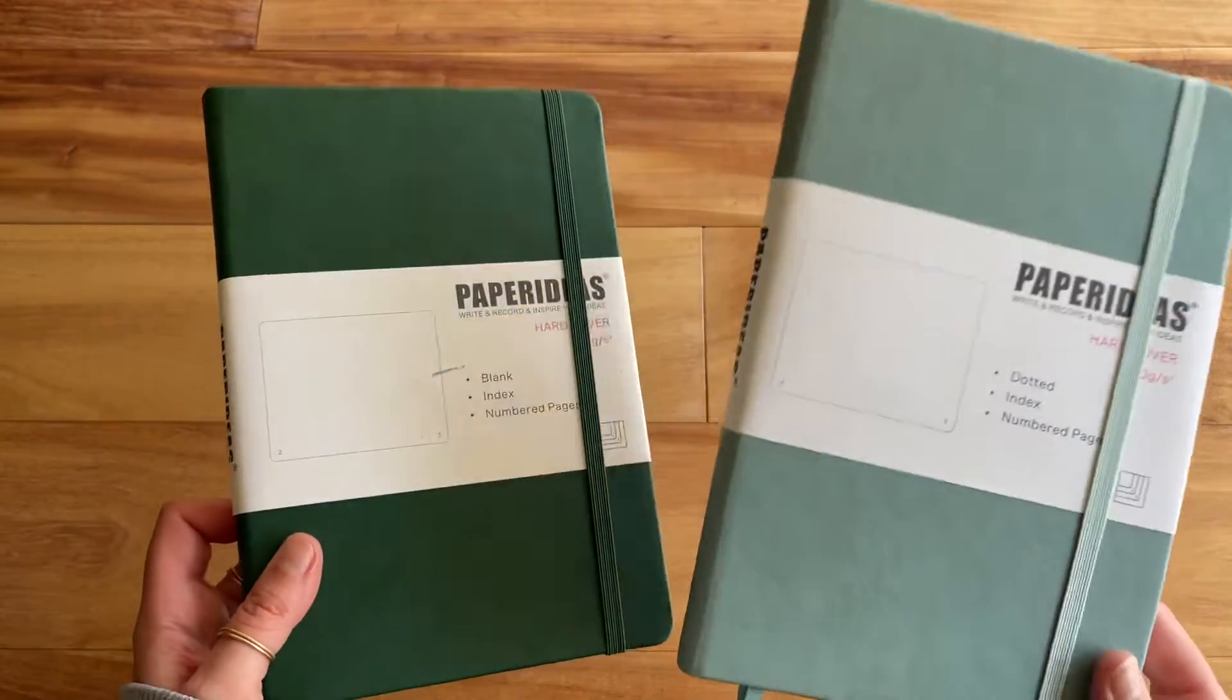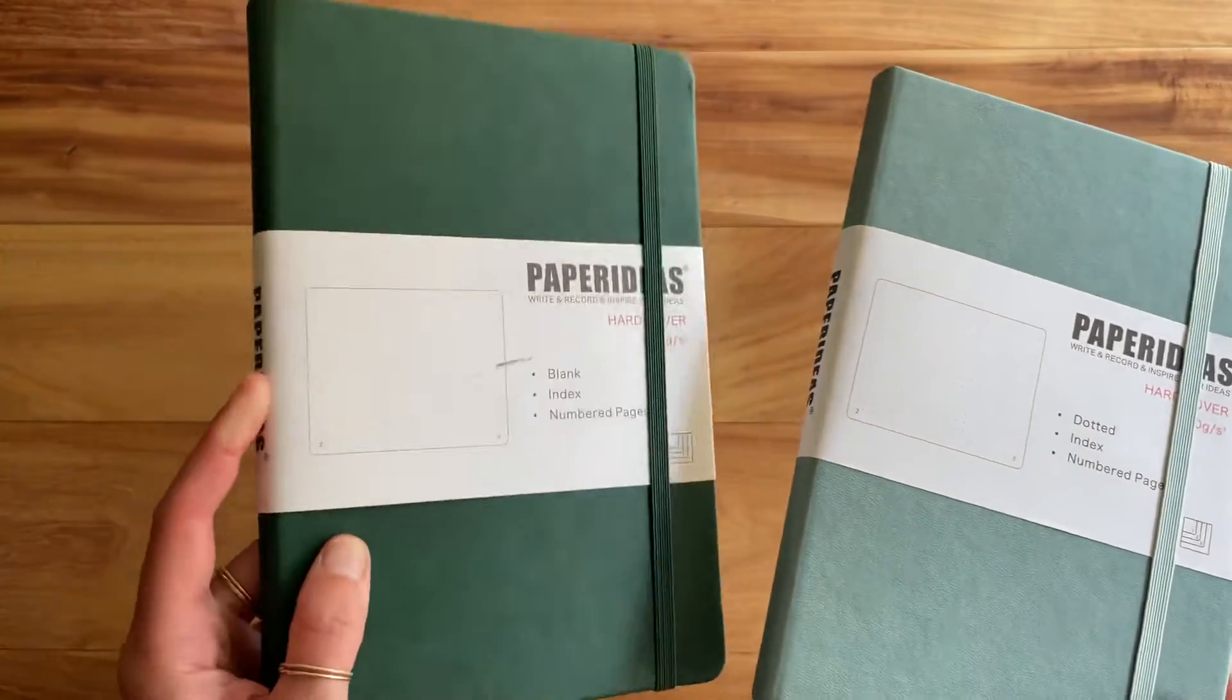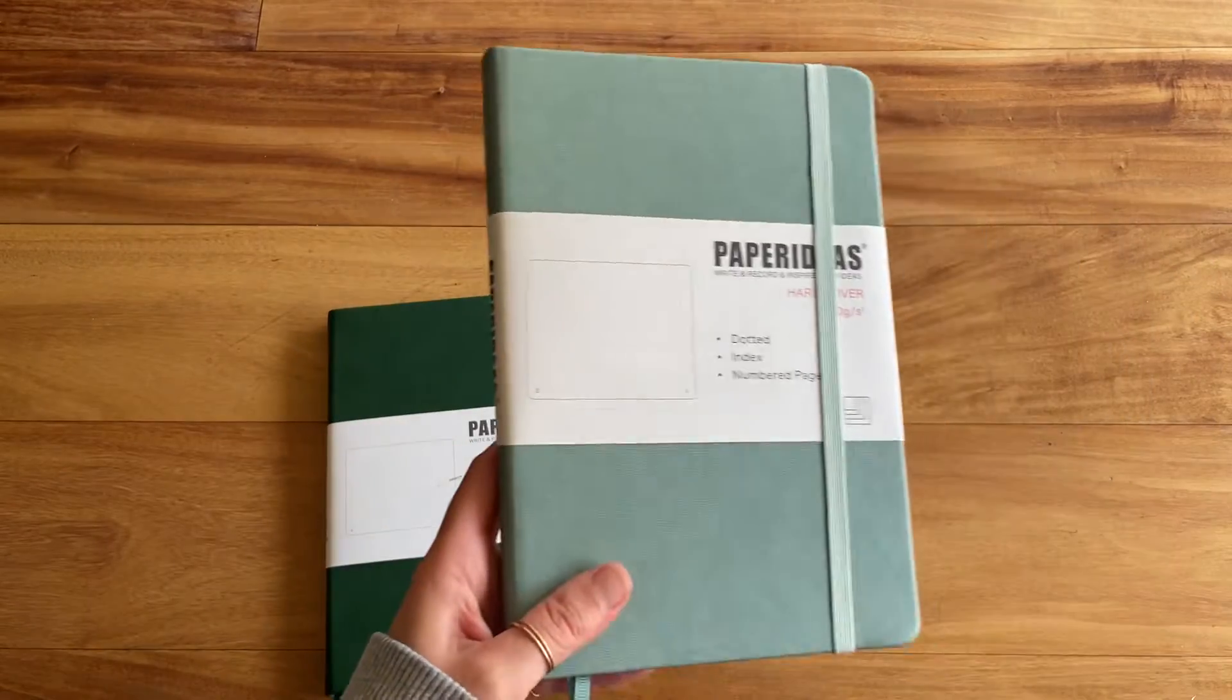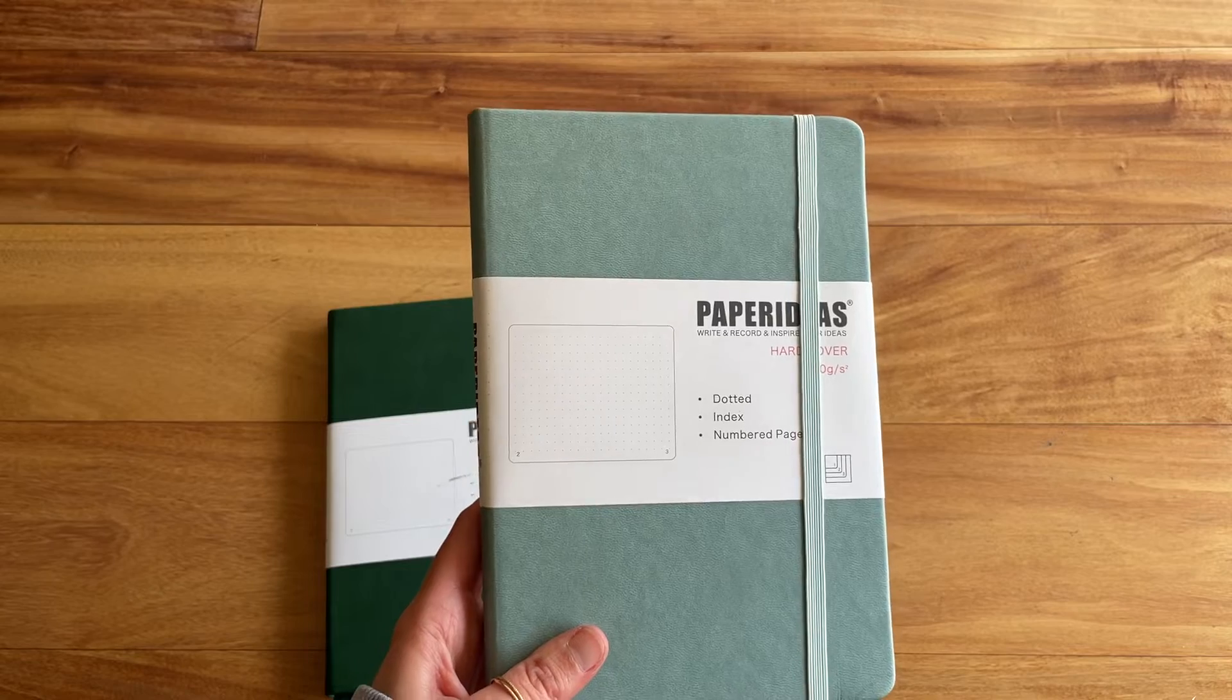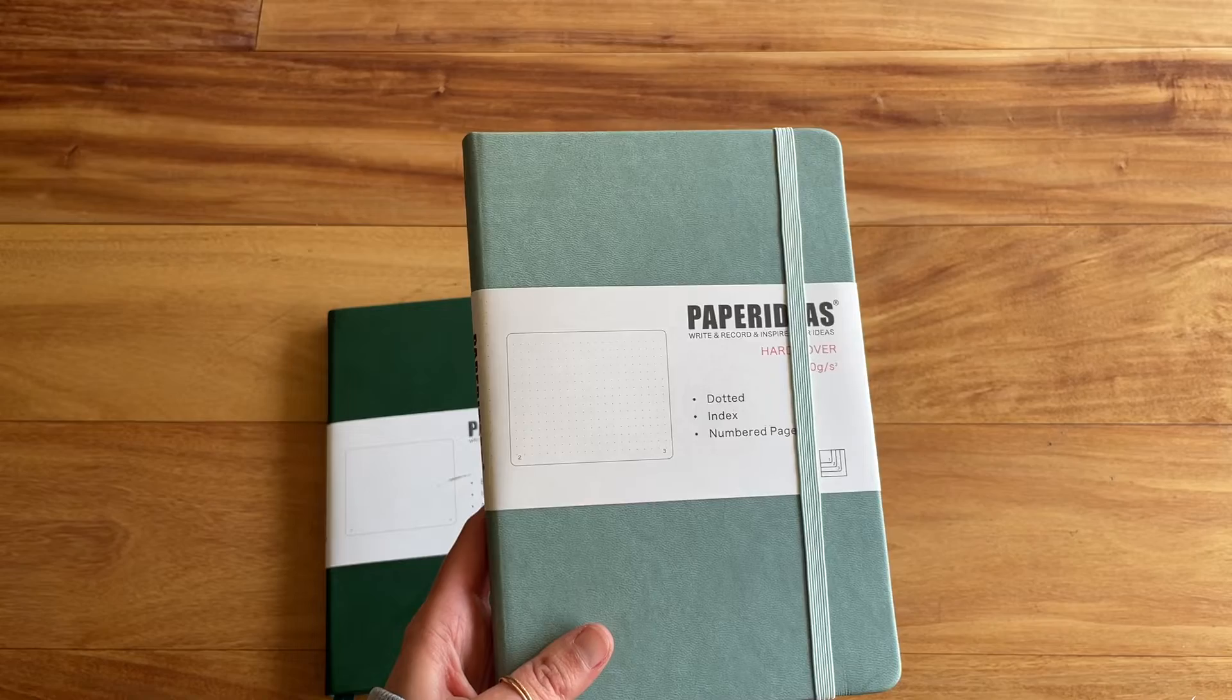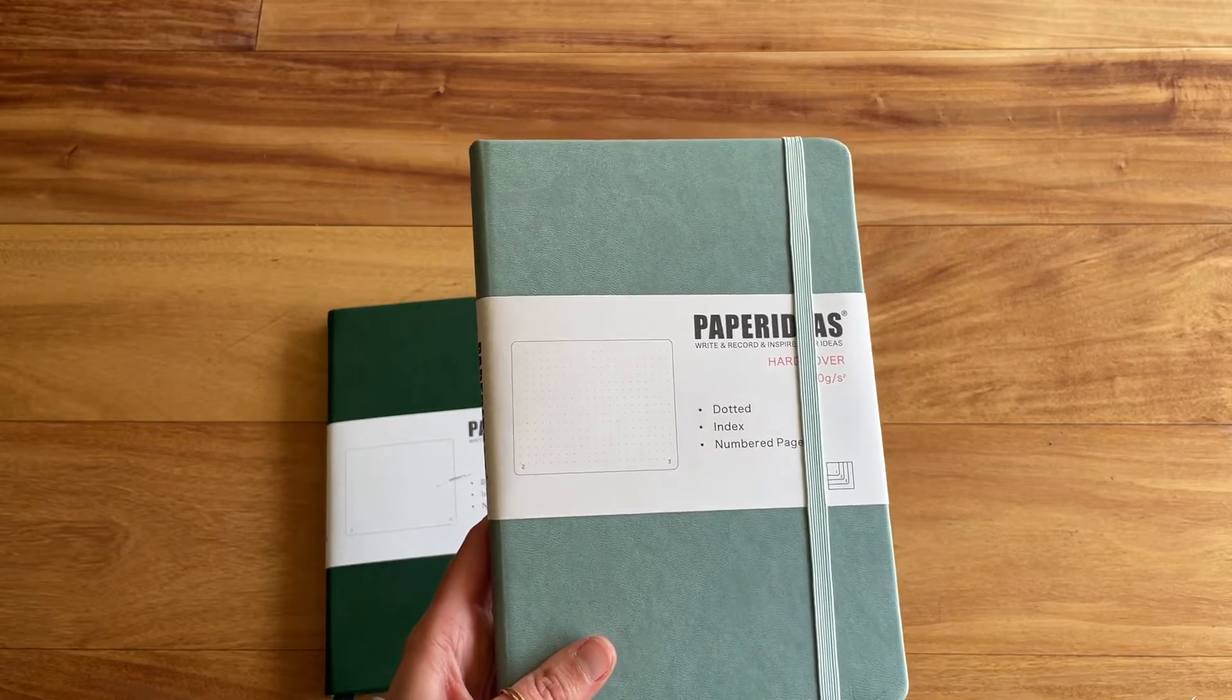And then this is a dotted grid. This is a blank. And I think they also have line and graph paper. So if you're interested in those, I'm going to link them below. Feel free to check them out. And if you want to grab those, I have a discount code for Stationery Pal for 12% off. Just use the discount code JOURNALJOY.